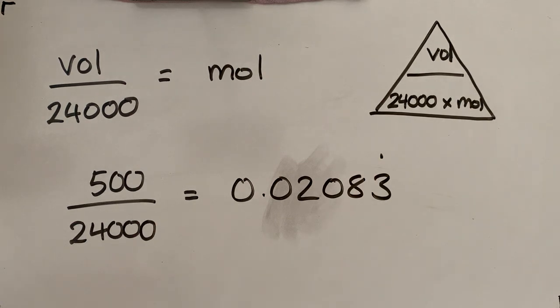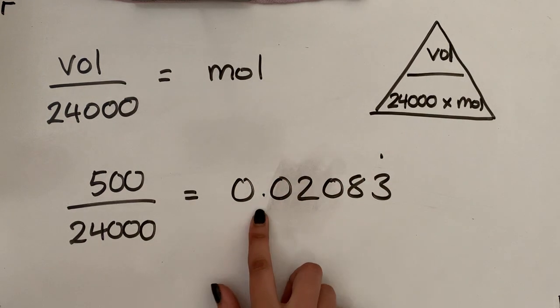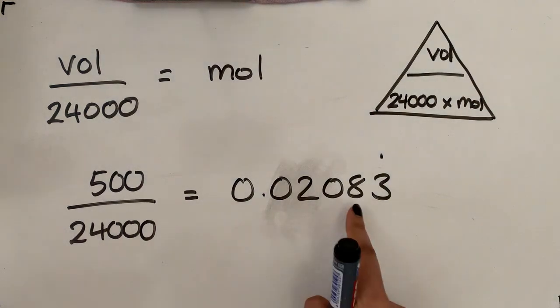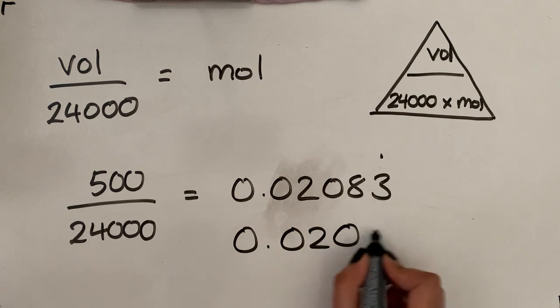Now I just want to cover significant figures. If I know this question doesn't actually say, but if it's asking you to convert this to three significant figures. The significant figures, you don't count the ones before the decimal place. So in this case, significant figures will be at the eight. So this will just be rounded to 0.0208.